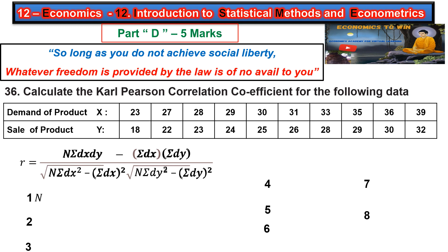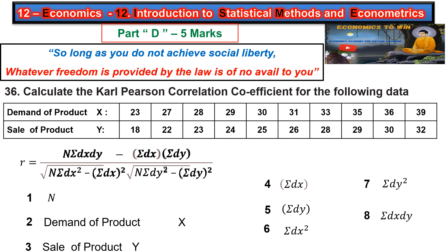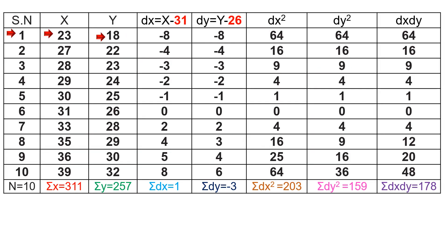To apply this formula we need 8 columns. First column: serial number. Second column: x values (demand of product). Third column: y values (sale of product). Fourth column: dx. Fifth column: dy. Sixth column: dx². Seventh column: dy². Eighth column: dx·dy.